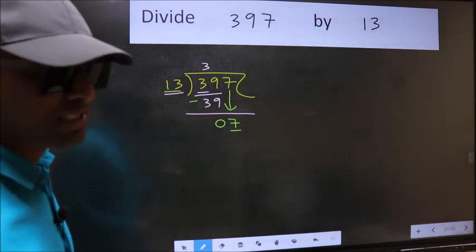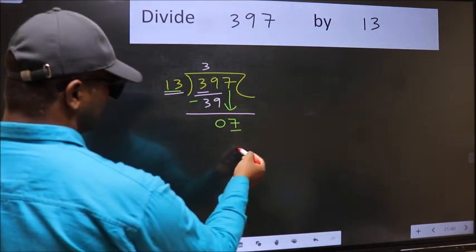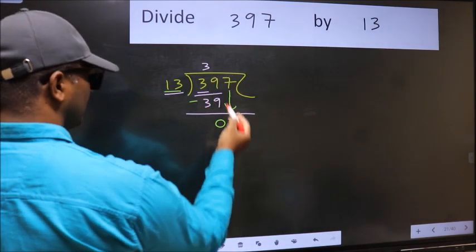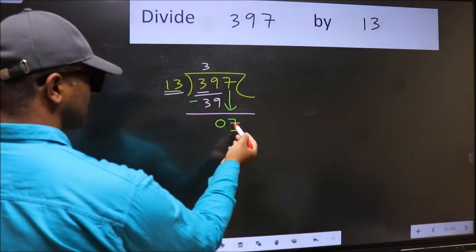Instead, what you should think of doing is, which number should we take here? If I take 1, we will get 13. But 13 is larger than 7.